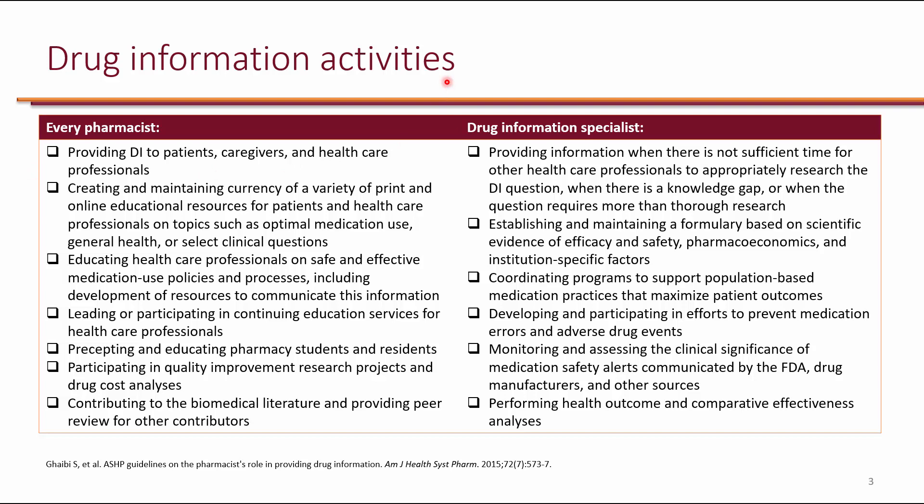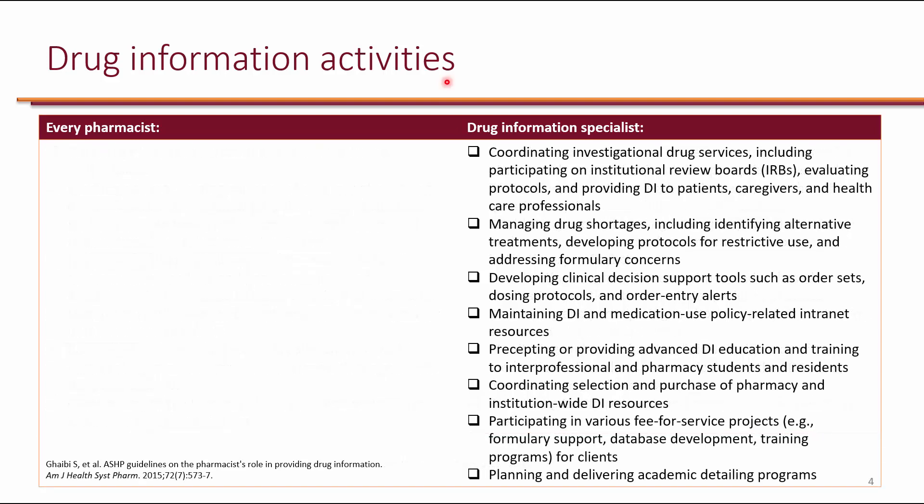There are activities that drug information specialists provide, such as providing information when there is not enough time for other healthcare professionals to appropriately research the topic, or when thorough research is required. Establishing and maintaining a drug formulary based on safety and efficacy evidence, pharmacoeconomics, and institution-specific factors. Another activity is participating in drug safety efforts to prevent medication errors and adverse drug events. Drug information specialists also have a crucial role during drug shortages, where they can determine alternatives during manufacturing issues or drug recalls.